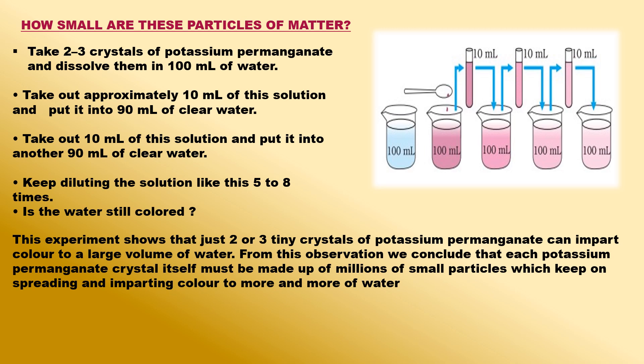Potassium permanganate is a kind of matter. We take two or three small crystals of potassium permanganate and dissolve it in 100 milliliters of water in a beaker. We will get a deep purple colored solution of potassium permanganate in water. Take 10 ml of this deep purple solution from the first beaker and mix it with 90 ml of water in a second beaker to dilute it.